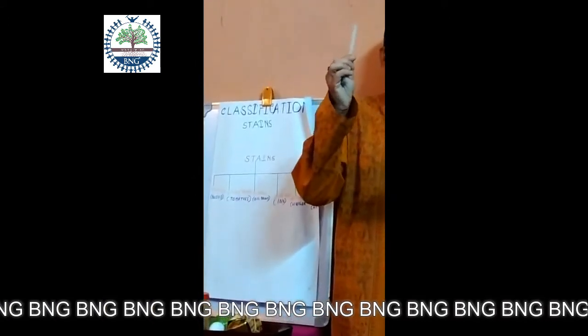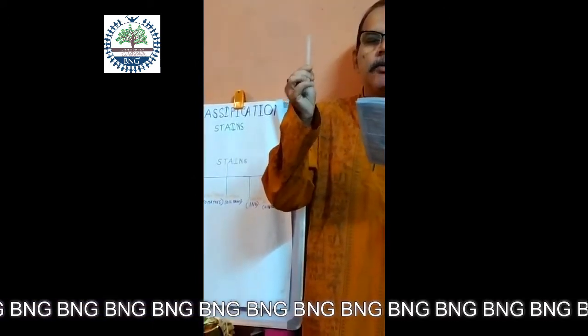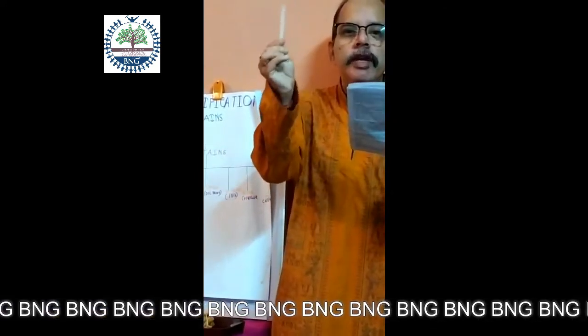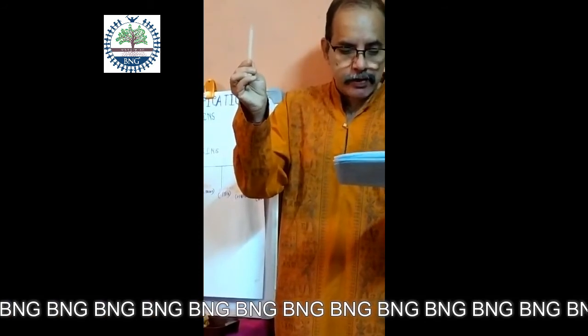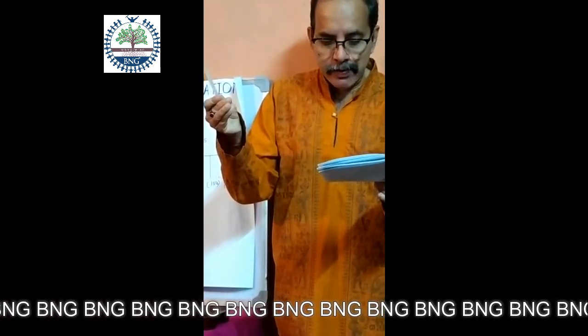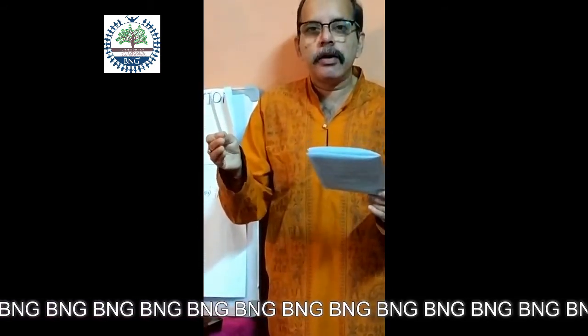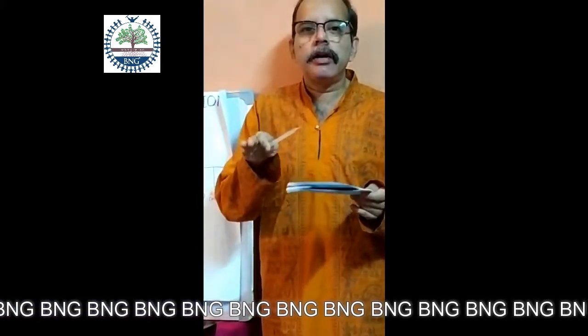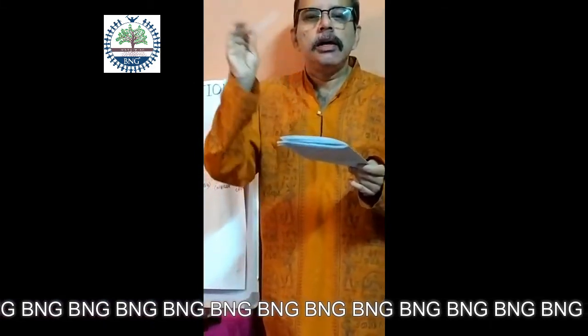Next comes candle wax stains. I am showing you a candle. Sometimes wax falls on linens or fabric material and makes marks. To remove candle wax stains: scrape off the surface with a blunt knife. Then place 2 sheets of tissue paper or blotting paper over the stain and place a warm iron on top. The wax will melt and the stain will disappear.